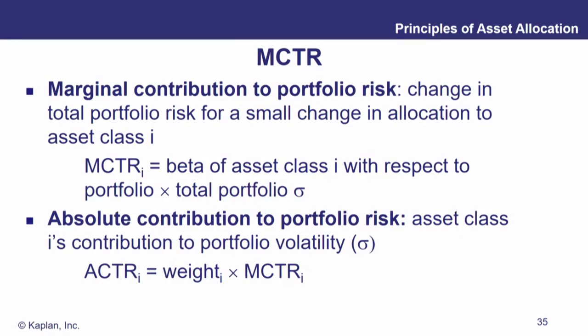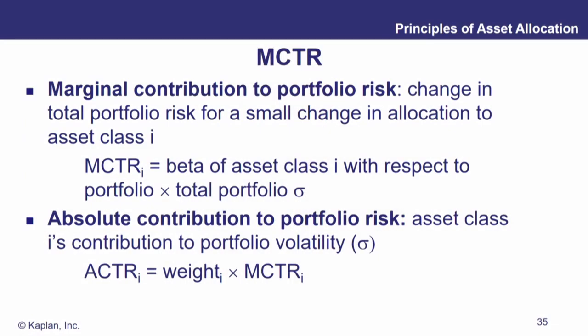Let's define two terms. First, MCTR — marginal contribution to portfolio risk — which is the change in total portfolio risk for a small change in allocation to asset class i. Mathematically, that's the beta of asset class i with respect to the portfolio multiplied by the total portfolio standard deviation. So a higher-beta asset class will have a higher marginal contribution to portfolio risk. Then from MCTR we can get the absolute contribution to total risk (ACTR): once we solve for the MCTR of every asset class, we multiply it by the weight that asset class carries in the portfolio.